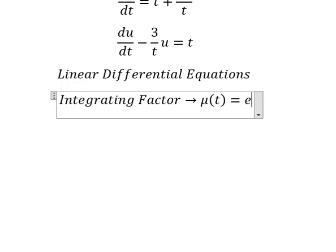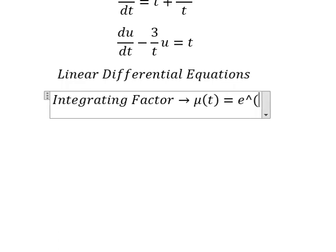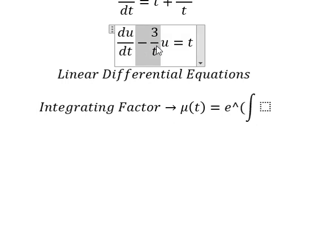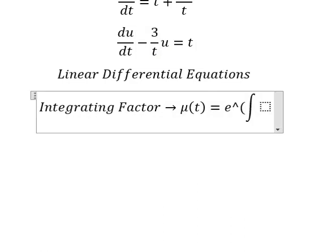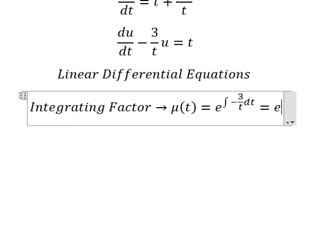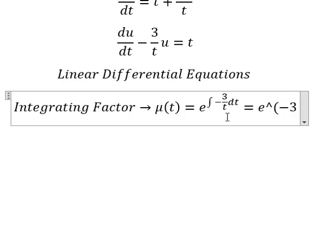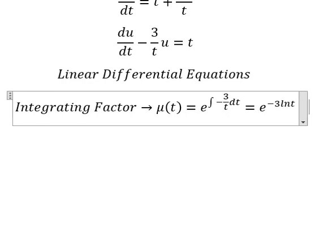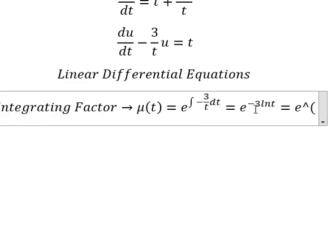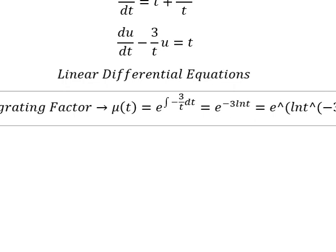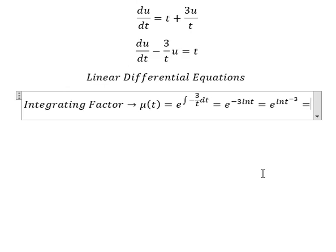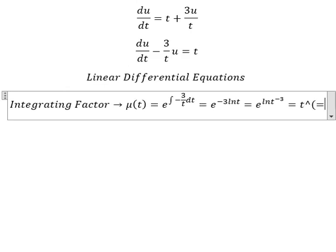The integrating factor is e to the power of the integral, so we can see that gives us negative three over t. We have the natural log in here, and the negative three goes inside the natural log, giving us t to the power of negative three.